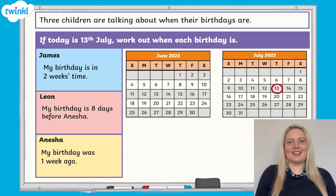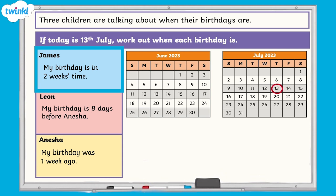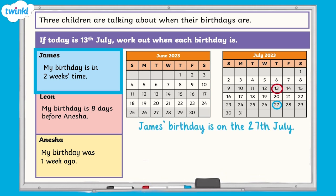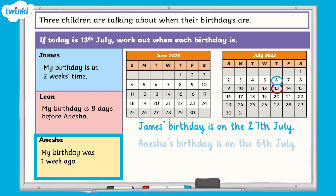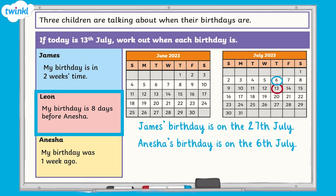All finished? If we count on two weeks from the 13th of July, we get to the 27th of July — James' birthday is on the 27th of July. Before we can work out Leon's birthday, we need to know Anisha's. Counting back one week from the 13th of July gives us the 6th of July — Anisha's birthday. Counting back eight days from the 6th of July gives us the 28th of June — Leon's birthday.